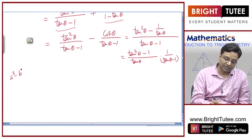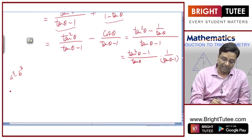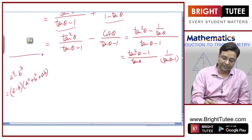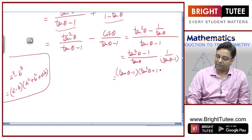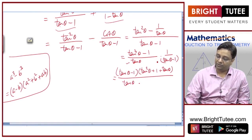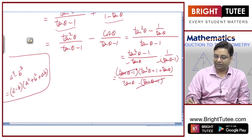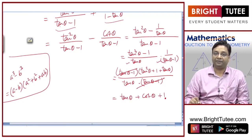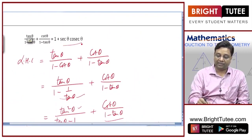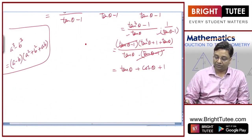Apply the factorization a³ − b³ = (a − b)(a² + b² + ab): tan³θ − 1 = (tanθ − 1)(tan²θ + 1 + tanθ). The (tanθ − 1) factor cancels with the denominator, leaving (tan²θ + tanθ + 1) divided by tanθ. This gives tanθ + 1 + cotθ. We need the answer in terms of secant and cosecant.